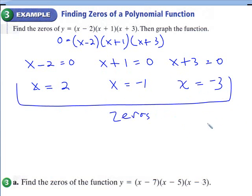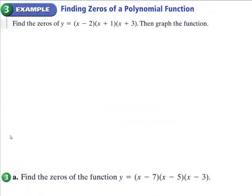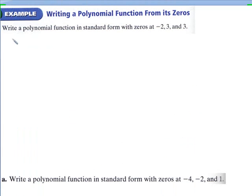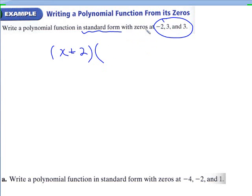Remember, the zeros are the same thing as the roots or the solutions. Now, Example 4: write a polynomial function in standard form with the given zeros. They give us the zeros instead of us finding them. If you know what the zeros are, you put them in binomial form — just remember to use the opposite signs. So if the zero is negative 2, you put x plus 2; if it's positive 3, you put x minus 3, then another x minus 3.